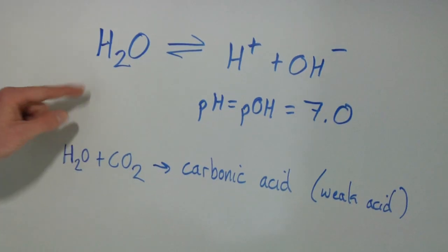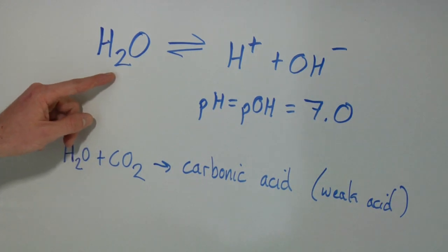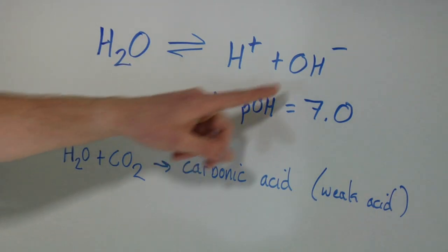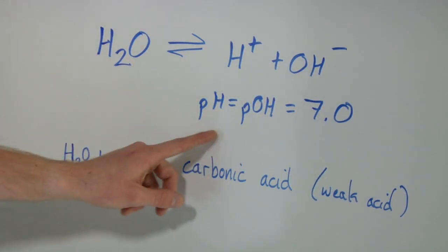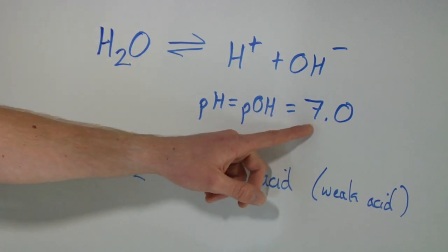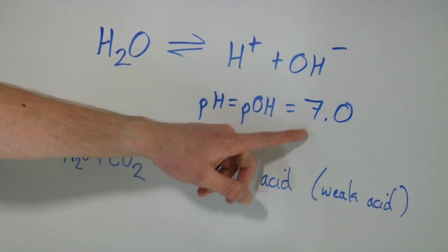Water by definition has a pH of 7 because it has equal concentrations of hydrogen ions and hydroxyl anions. Here we have a basic equation for water breaking up into its parts: water goes to hydrogen ions and hydroxyl anions, and essentially by definition pH is 7.0, which is neutral.